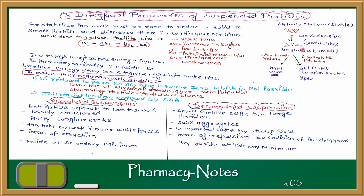To make the system stable, we can add a structured vehicle. But if the particle has a sediment that settles down and we shake the whole system, it will form a hard cake, which is a deflocculated type of suspension. If we add a flocculating agent, electrolyte, polymer, or surface active agent, the particles will maintain enough distance from each other and create loose, fluffy coagglomerates, which will enable a flocculated suspension.